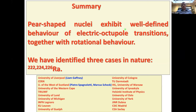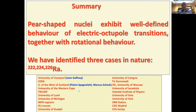To summarize: we've seen that pear-shaped nuclei exhibit well-defined behavior in electric octopole transitions together with rotational behavior. We've identified three cases in nature which at least seem to have a definite pear shape: radium-222, 224, and 226. I'd like to thank the quite large collaboration, in particular Liam Gaffney, Pietro Spagnoletti, and Marcus Scheck.